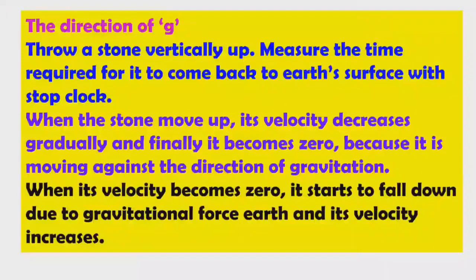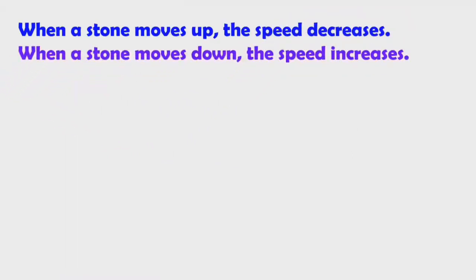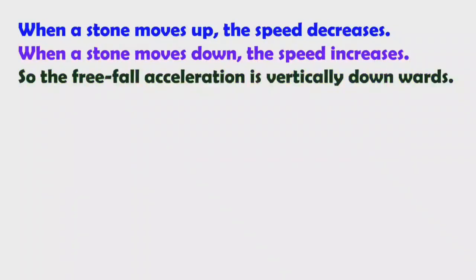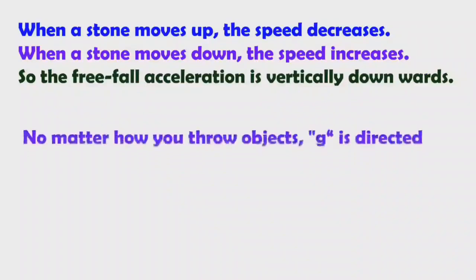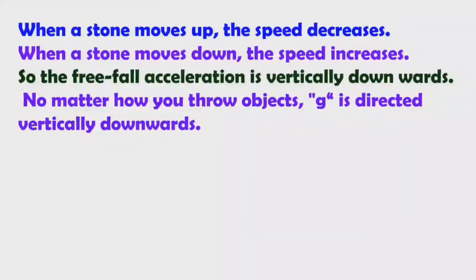When the stone is falling towards the earth, its velocity slowly increases because it is travelling in the direction of the gravitational force. So the direction of g is always towards the earth's surface. When a stone moves up the speed decreases; when a stone moves down the speed increases. From this observation, free fall acceleration is directed vertically downwards.